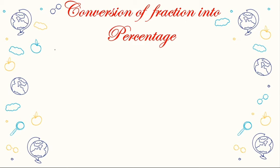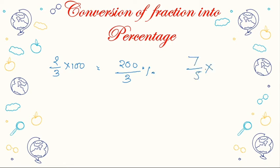To convert a fraction into percentage, you multiply by 100. So 60/3 becomes 200/3 percent. Similarly, for 7/5, multiply by 100: 7/5 × 100 = 140%. In this way you can convert any fraction into percentage by multiplying by 100.